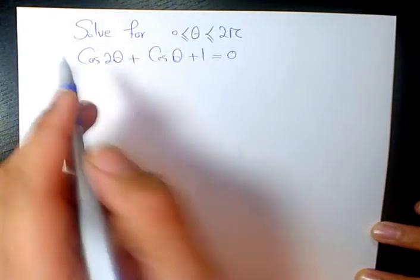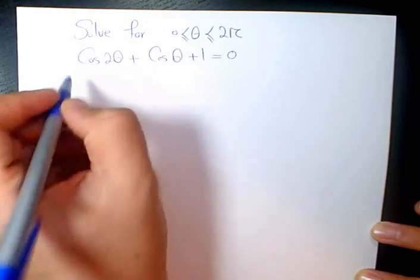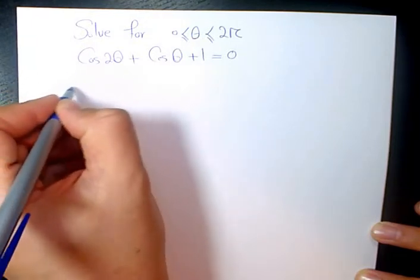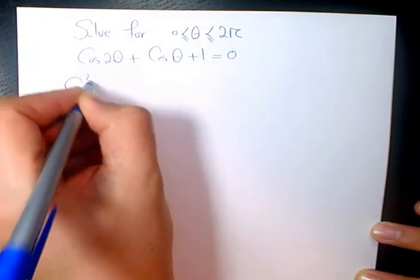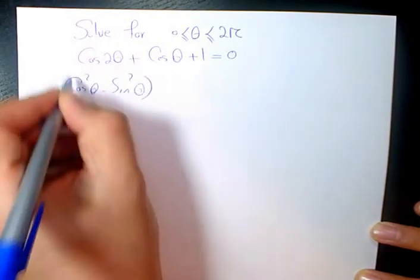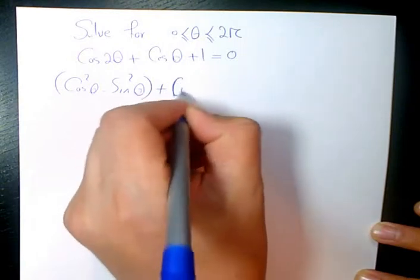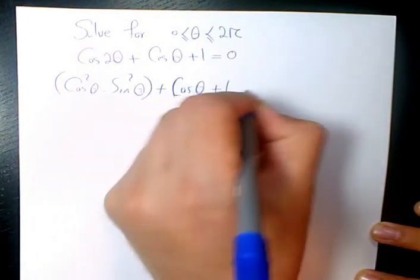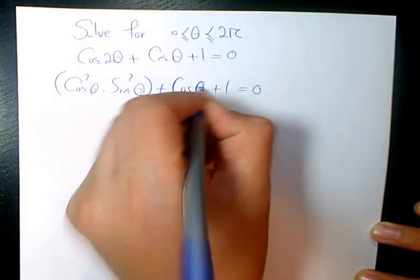I need to use the double angle trigonometric equation. Cos(2θ) is cos²(θ) - sin²(θ). We had it earlier before. Plus cos(θ) plus 1 equals 0.